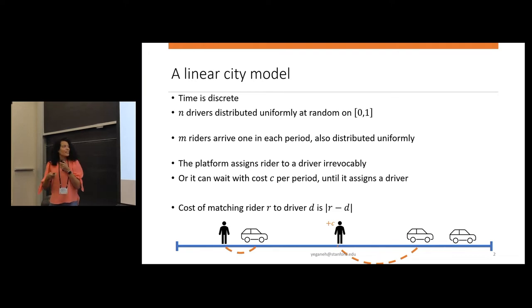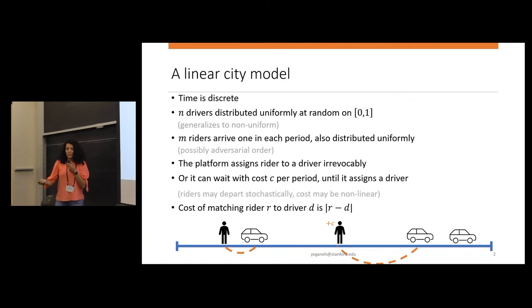And the cost of matching a rider to a driver is equal to their distance. I have to say that we can lift some of the assumptions in this slide. For example, the uniformity is not that important, smoothness is enough, or the arrival could be adversarial. Also, we can have more details about the waiting cost, like it could be nonlinear, or riders could depart stochastically. And you will see in a few minutes why these details don't matter for us.